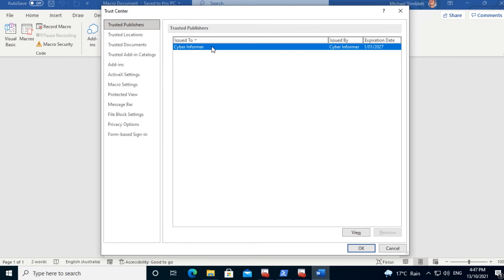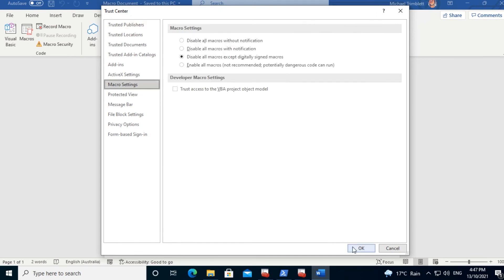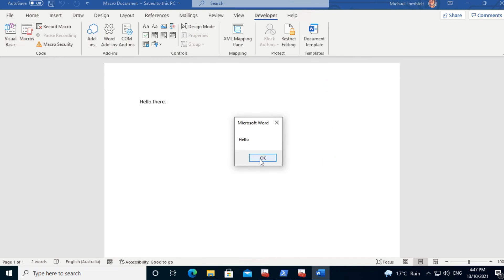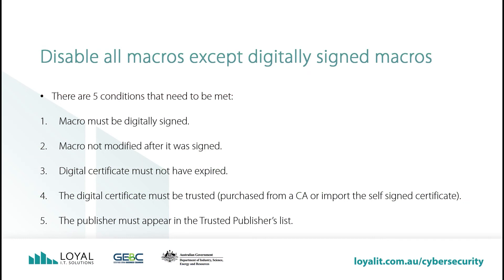Let's run the macro now one last time for good luck. Say hello, run — and it runs. Now we've seen how it works, the five conditions that need to be met should make more sense. Remembering: 1. The macro must be digitally signed. 2. The macro not modified after it was signed. 3. The digital certificate must not have expired. 4. The digital certificate must be trusted — purchased from a CA, or import the self-signed certificate, which is what we did. And 5. The publisher must appear in the Trusted Publishers list.